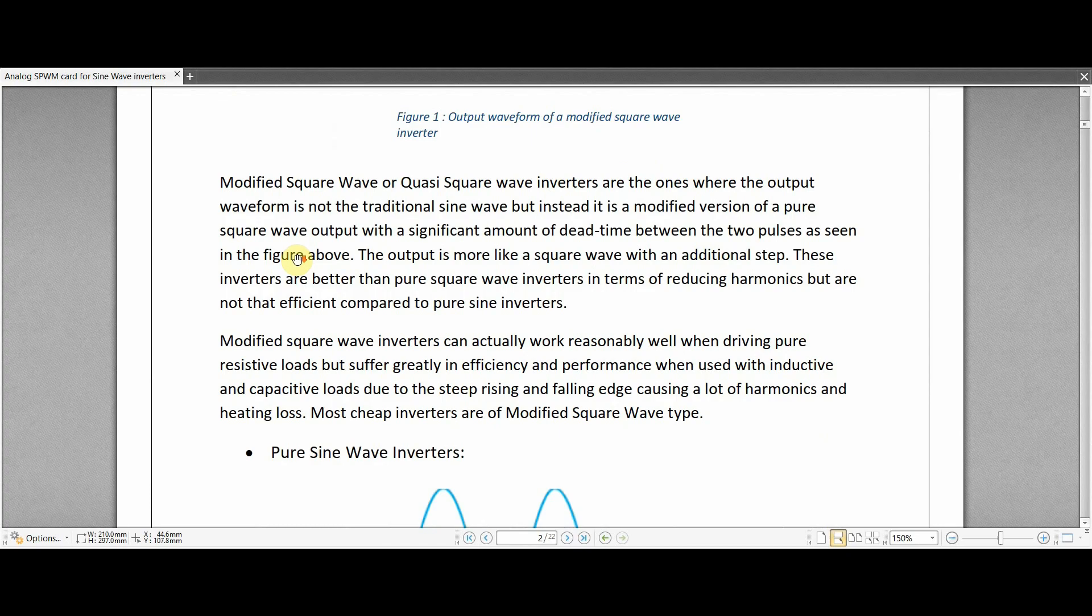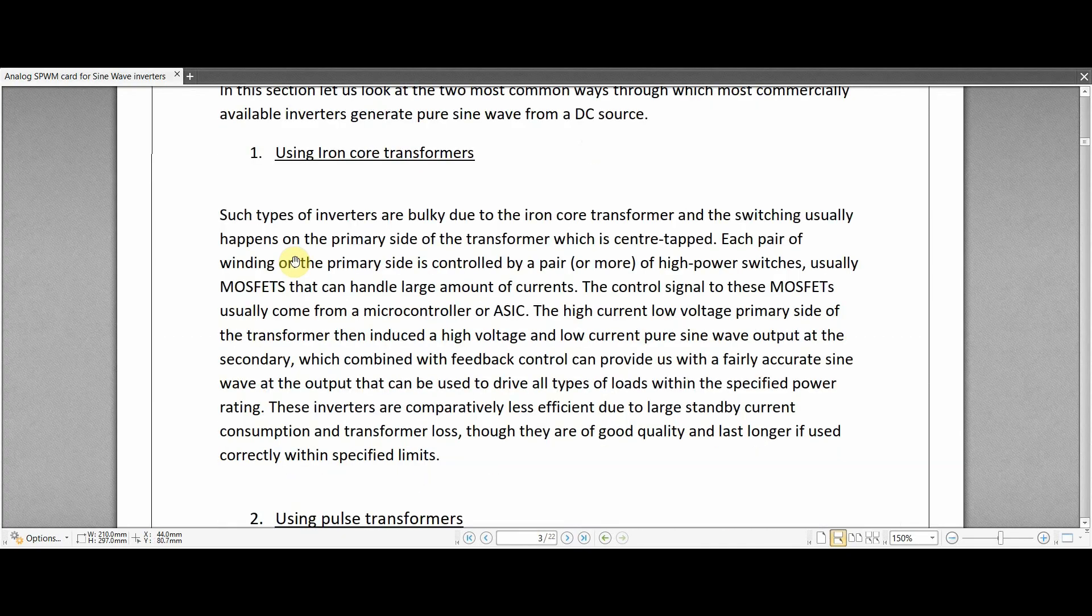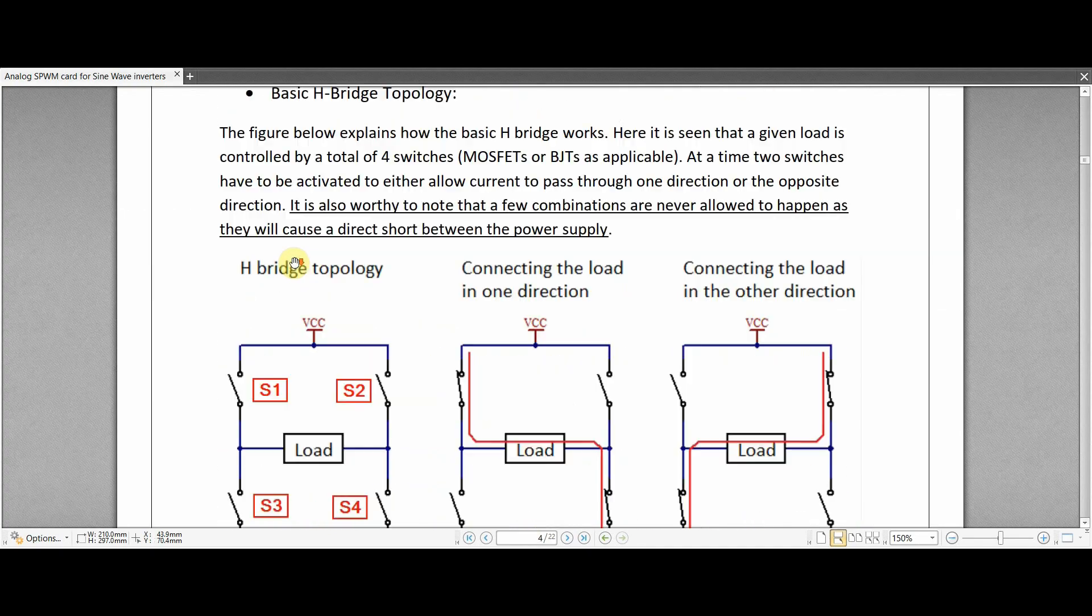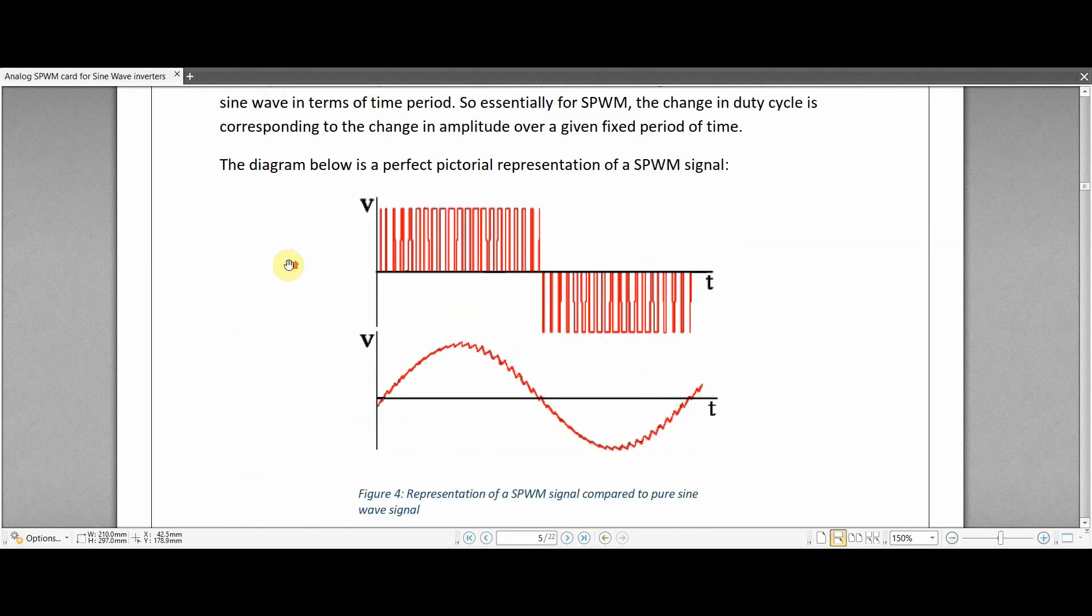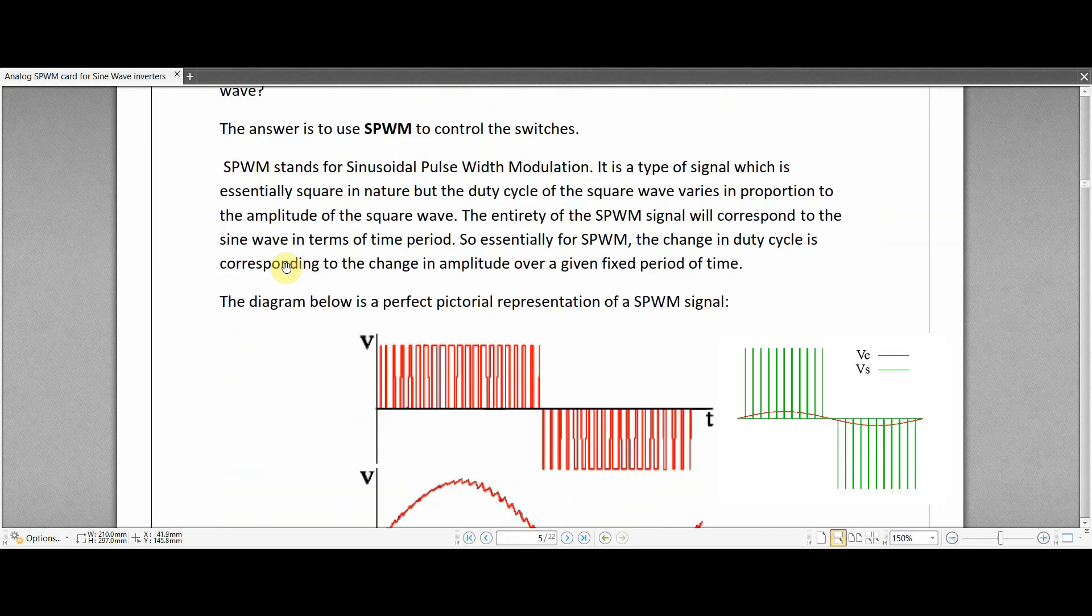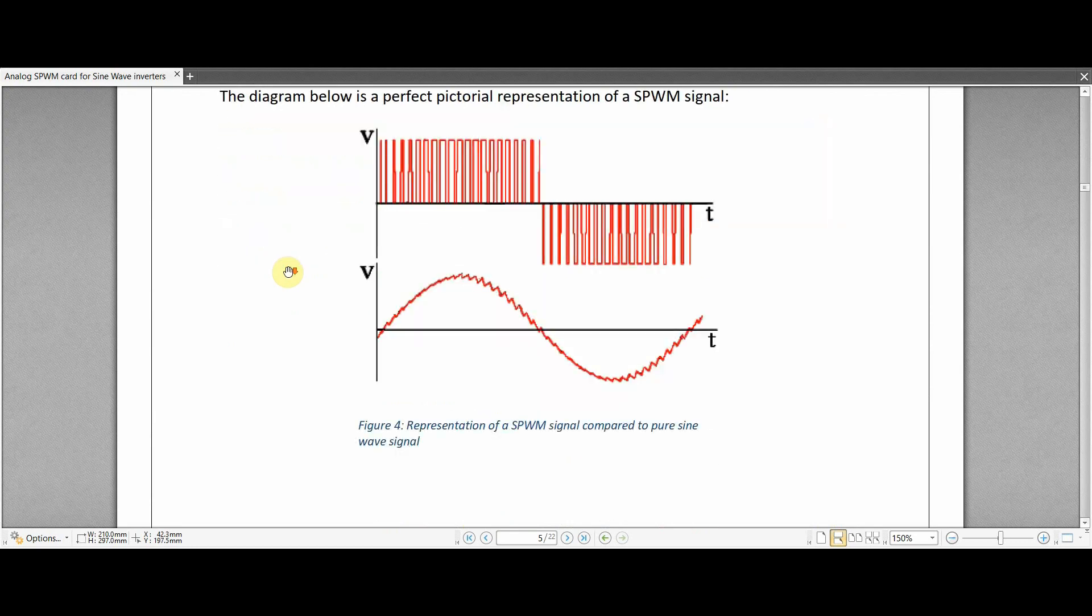Coming to the generation of SPWM, let us first have a look at what SPWM signals are. SPWM signal stands for Sinusoidal Pulse Width Modulation and it is a type of square wave signal whose duty cycle changes with respect to the amplitude of a given signal, in our case a sine wave.